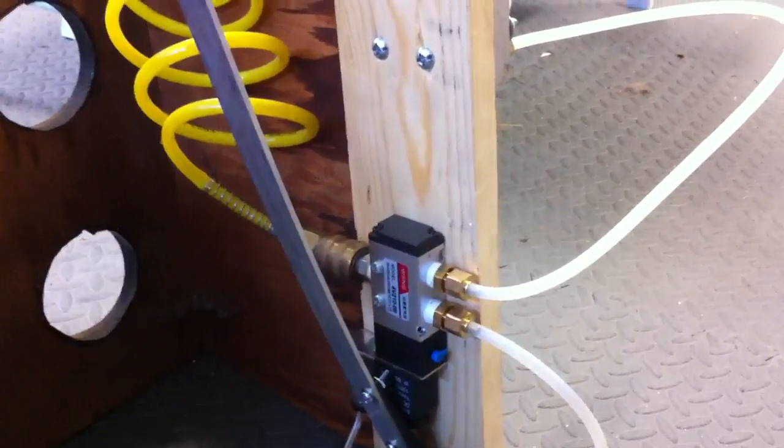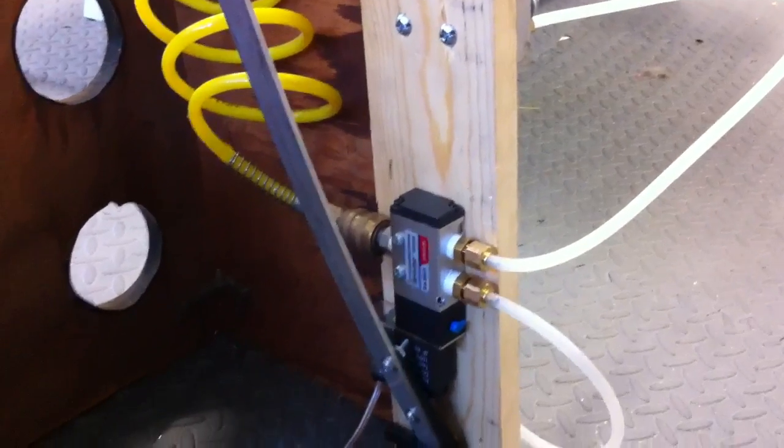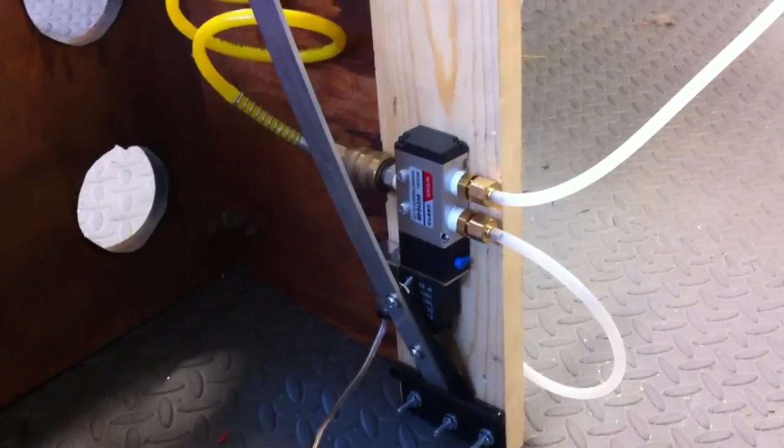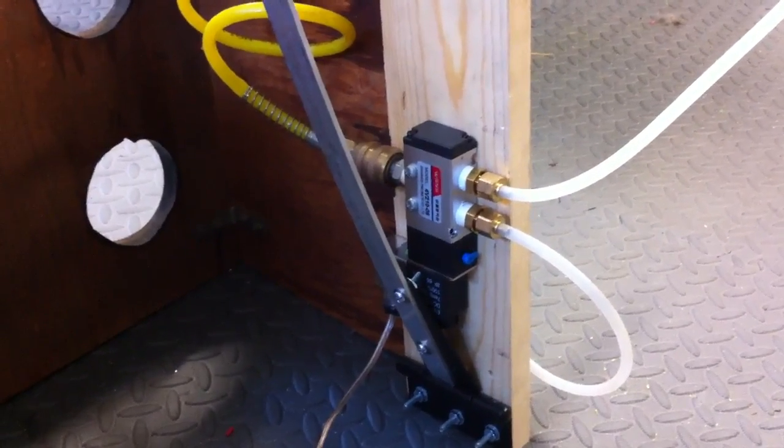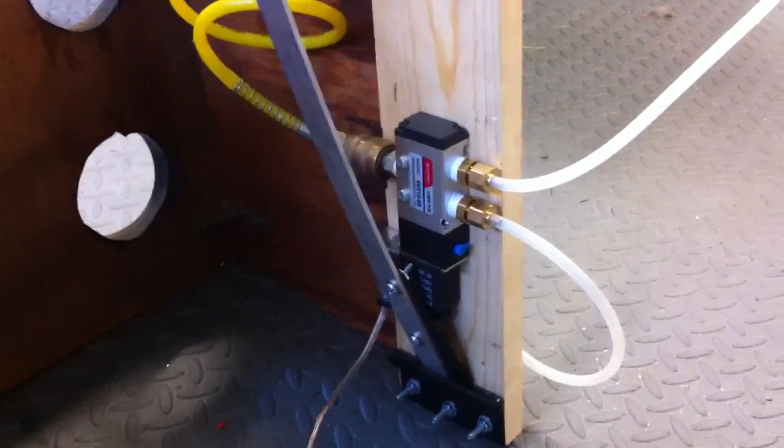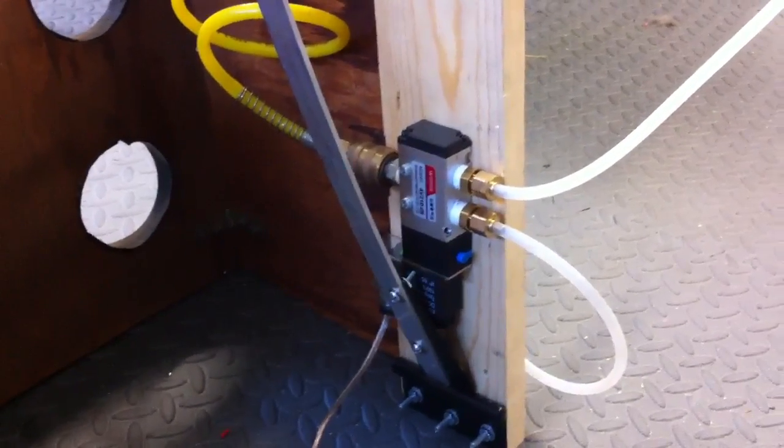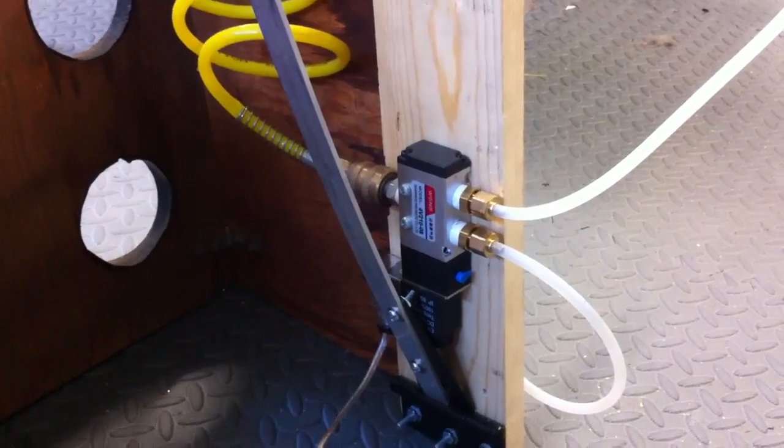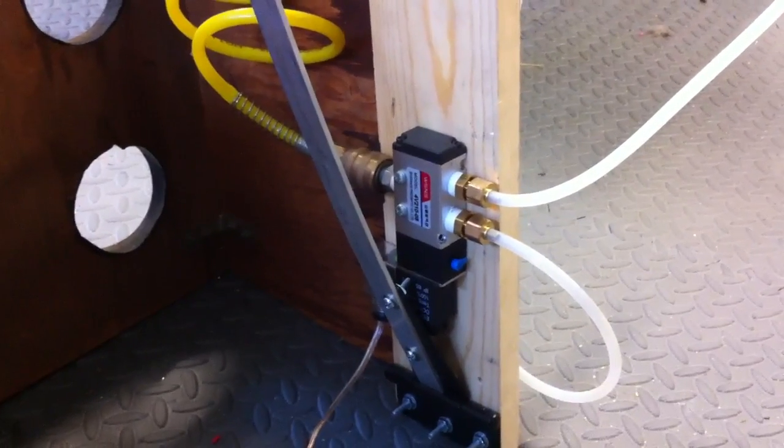I'm actually looking at it. I probably need to move it up because it looks like one of the bolts is hitting it. But it's pretty straightforward. It's a 3-way solenoid. I think that's what this one is anyway. I got it on eBay for like $17, I think. It's from China, but it works fine so far.